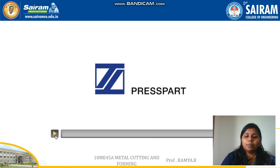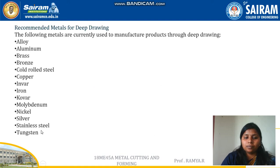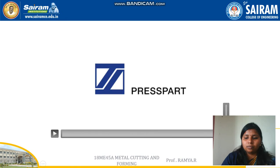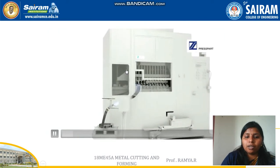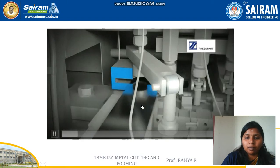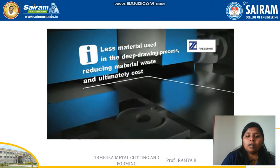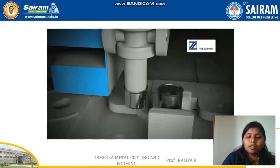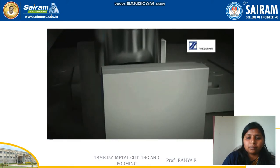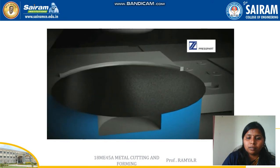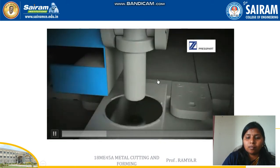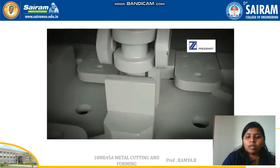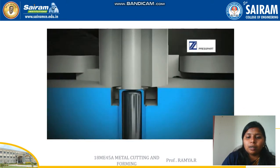Here is a video of how the deep drawing process takes place in the industries. This video shows the deep drawing equipment machine. Only a very small amount of material is reduced in this deep drawing process. Here you can see the die — the sheet metal is placed and this is the punch.